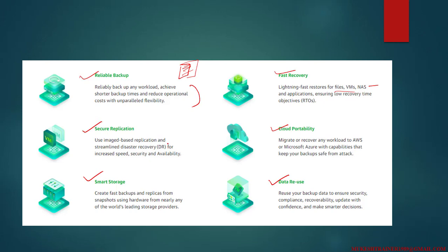Secure replication uses image-based replication and streamlines disaster recovery for increased speed, security, and availability. Cloud portability allows you to migrate or recover any workload to AWS Amazon or Microsoft Azure, with capability that keeps your backup safe from attack. Smart storage lets you create fast backups and replicate from snapshots using hardware from nearly any of the world's leading storage providers.